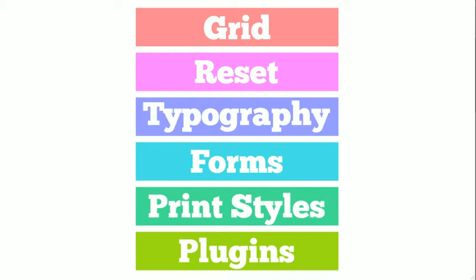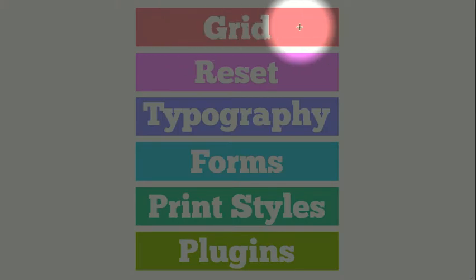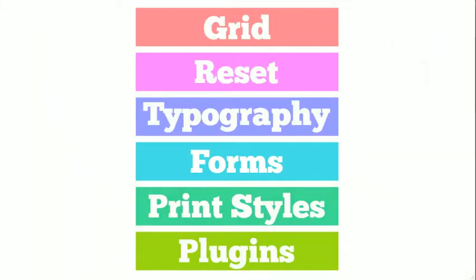Getting a bit more specific, let's take a look at the parts of a typical CSS framework. Usually the main part of a CSS framework is some type of grid system, which you can see here at the top. By using a grid system, you can more quickly and confidently lay out a webpage. Grid systems give you finer aesthetic control and allow you to give a page lots of strong visual structure.